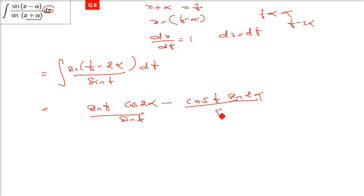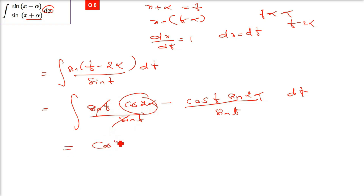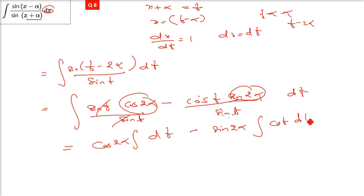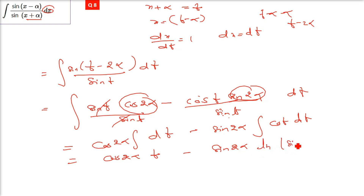sin(t) in the denominator cancels with sin(t) in the first term. cos(2α) is a constant so ∫cos(2α)dt = cos(2α)·t. For the second term, cos(t)/sin(t) = cot(t), and ∫cot(t)dt = ln|sin(t)|. So the result is cos(2α)·t − sin(2α)·ln|sin(t)| + C.